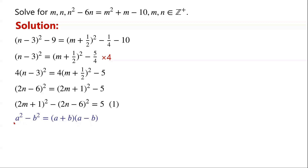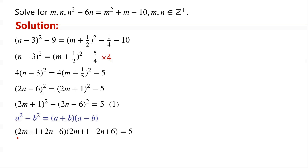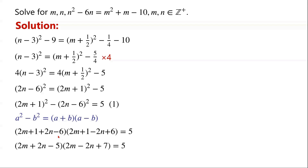We know that a squared minus b squared can be written as (a plus b)(a minus b). Applying this, the equation becomes (2m plus 1 plus 2n minus 6)(2m plus 1 minus 2n plus 6) equals 5. Note that 1 minus 6 is minus 5, and 1 plus 6 is 7.